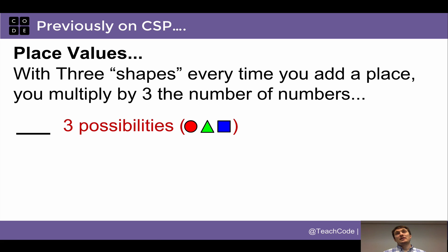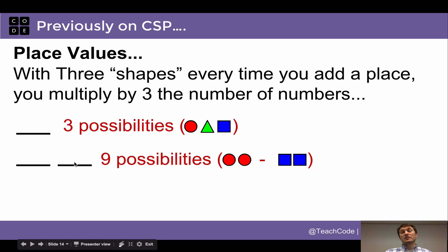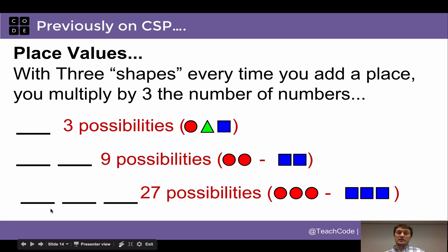We can do the same thing in a different number system, so if we imagine that with three shapes, our circle, triangle, and square, with three shapes, every time we add a place, we multiply by three the number of possible numbers we can make. So with one place value, there are three possibilities. With two place values, there are nine possibilities, and we saw this earlier. And with three place values, there are 27 possibilities. So every time we add a place to put a shape, it multiplies by three the number of things that we can make.